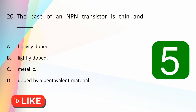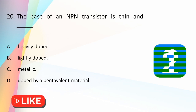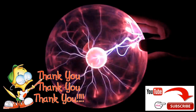The base of an NPN transistor is thin and: heavily doped, lightly doped, metallic, or doped by pentavalent material? The answer is lightly doped. In an NPN transistor, the base and collector are lightly doped. That is all for this video. Thank you for watching.